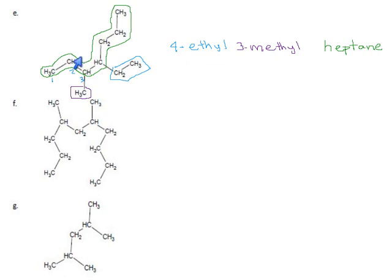If you were drawing this, you would actually start on the right and say, draw a heptane. Now, on its third carbon, put a methyl group. Then on its fourth carbon, attach an ethyl group.